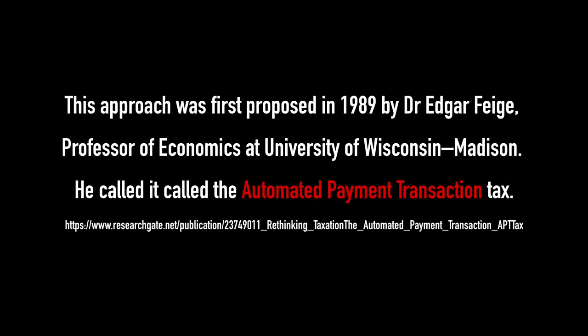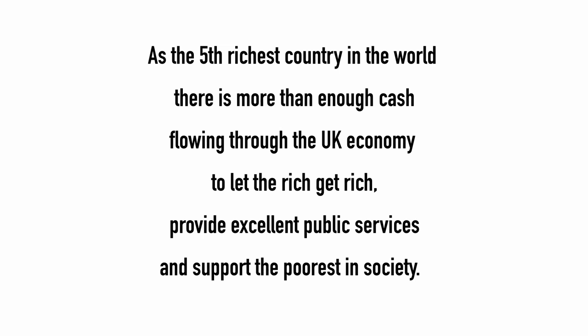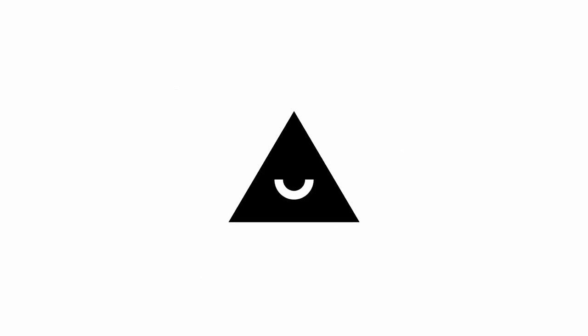This approach was first proposed in 1989 by Dr. Edgar Feige. He called it the Automated Payment Transaction Tax. As the fifth richest country in the world, there is more than enough cash flowing through the UK economy to let the rich get rich, provide excellent public services and support the poorest in society.